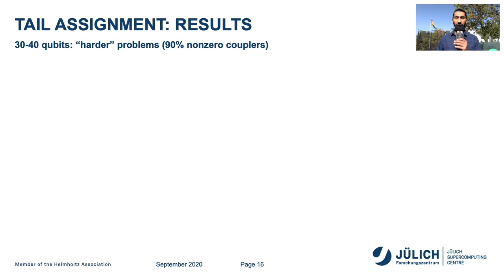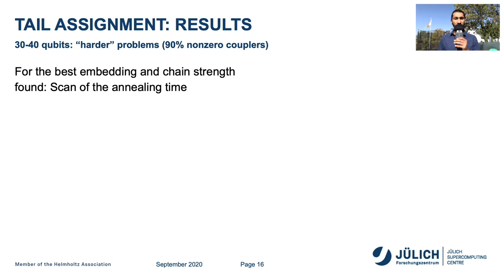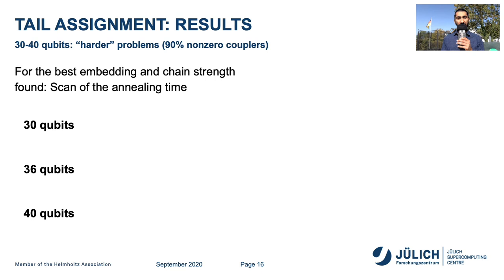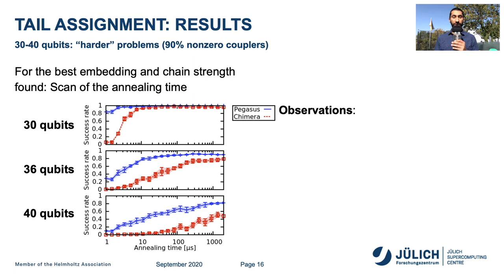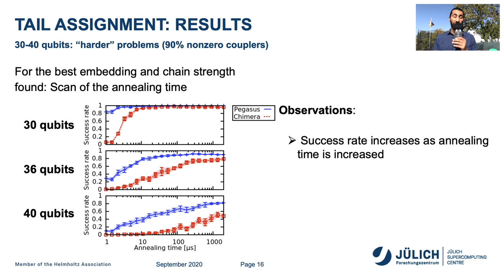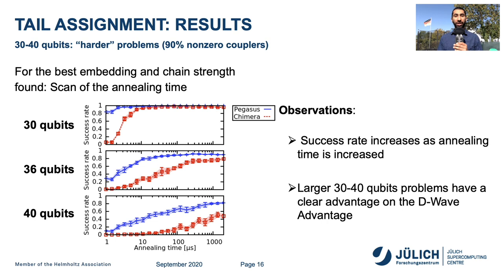For these hard problems of 30 to 40 qubits with around 90% non-zero couplers, we choose the best embedding and chain strength found and perform a scan of the annealing time for 30, 36, and 40 qubits. We plot on the y-axis the success rate and on the x-axis the annealing time in microseconds. The blue curve corresponds to Pegasus and the red one to Chimera. The success rate increases as annealing time is increased, and larger 30 to 40 qubit problems show a clear advantage on the D-Wave Advantage.